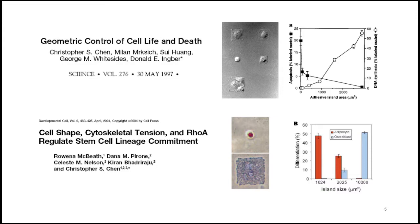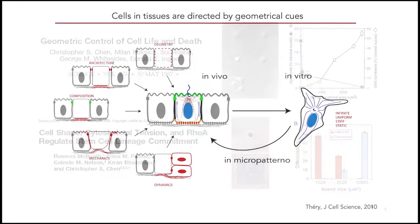This showed it was actually the cell spreading area, rather than the cell adhesion area, which determines the ability of cells to grow or differentiate. Christopher Chen, the first author of this Science study, later showed in his own lab that mesenchymal stem cells spread on large patterns would differentiate into osteoblasts, whereas those confined on tiny islands would become adipocytes — demonstrating the major roles played by geometrical constraints on cell survival and fate.